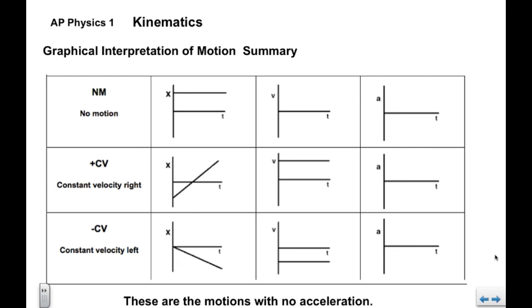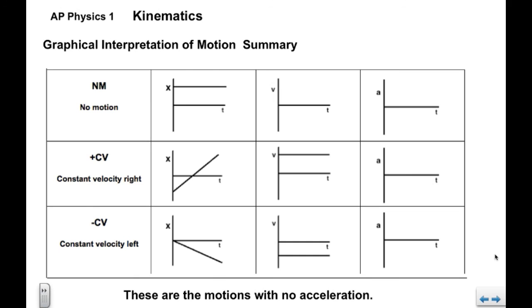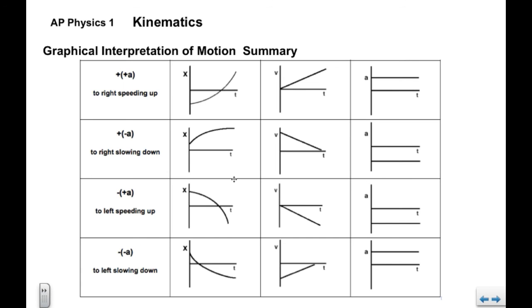Now we're going to summarize all of our qualitative graphical analysis. Here are the three graphs — x versus t, v versus t, and a versus t — for no motion, plus CV, and minus CV showing all three non-accelerated motions. For the accelerated motions — plus-plus A, plus-minus A, minus-plus A, minus-minus A — position, velocity, and acceleration are shown moving left to right. You can memorize them all, but knowing what each one means and what it's actually showing you is the better approach.